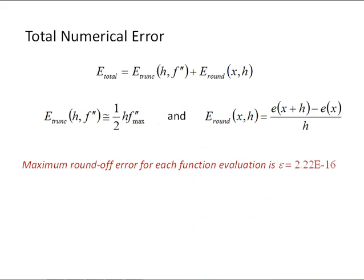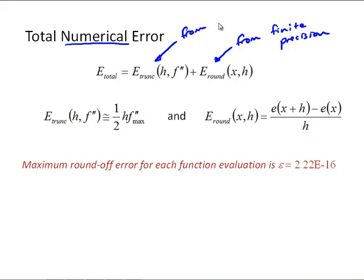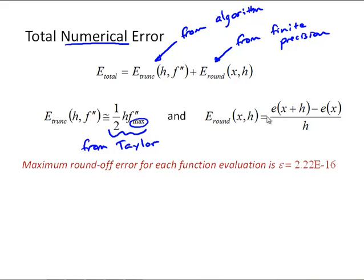We've got two sources of error, and we'll call this the total numerical error. We have round-off error, which comes from implementing on a computer with finite precision, and truncation error, which comes from the algorithm itself — the approximations we made truncating the Taylor series to develop the algorithm. The truncation error is one-half h times the second derivative (the maximum second derivative in the interval). The round-off error is the round-off from evaluating f(x+h) minus the round-off from evaluating f(x), all divided by h.